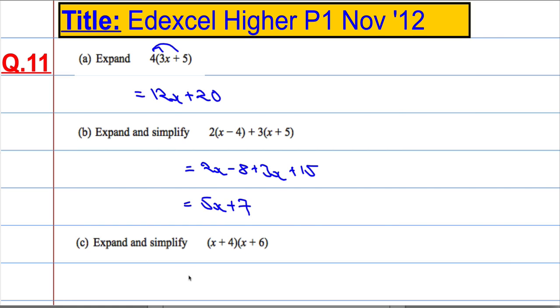And then next part here - expand and simplify. So x times x is x squared, x times 6 is 6x, 4 times x is 4x, and then 4 times 6 is 24.